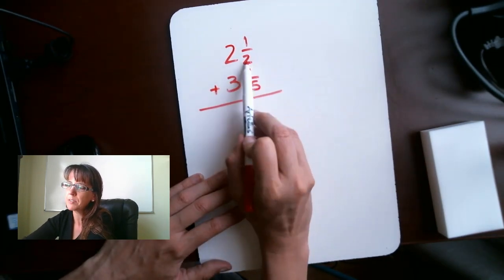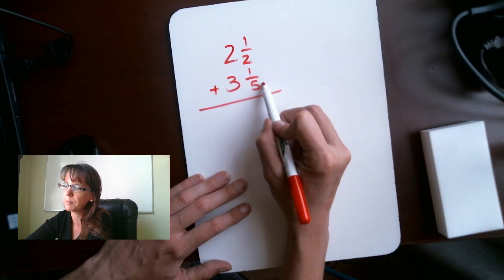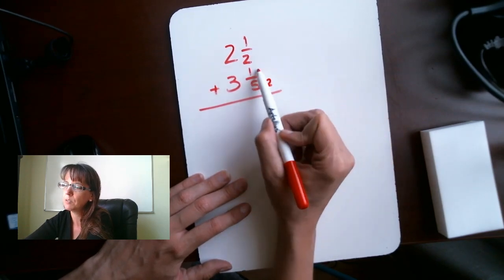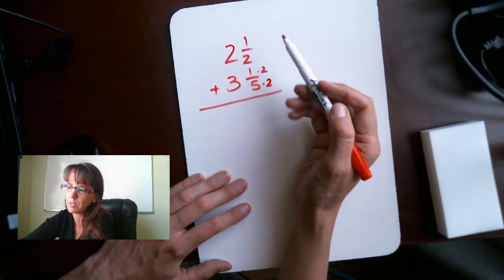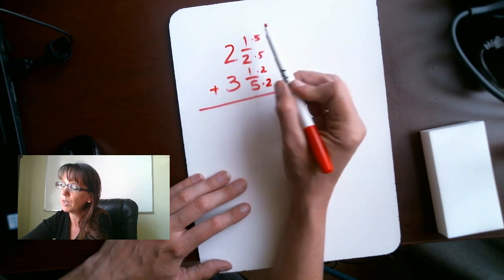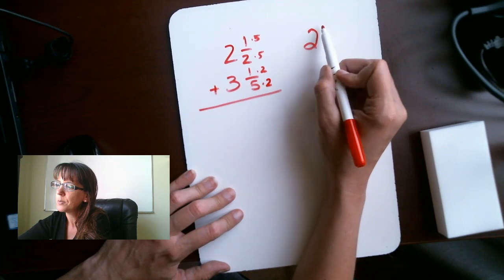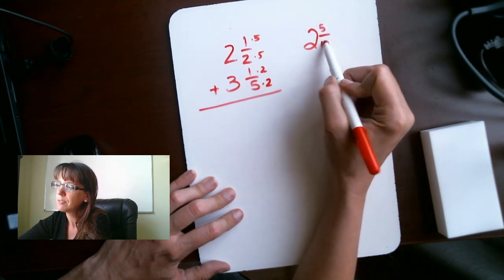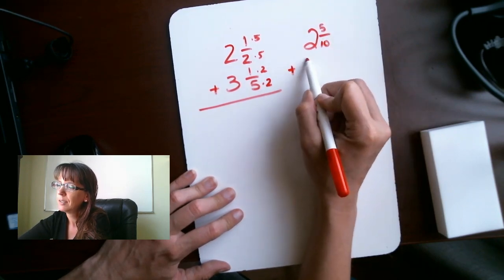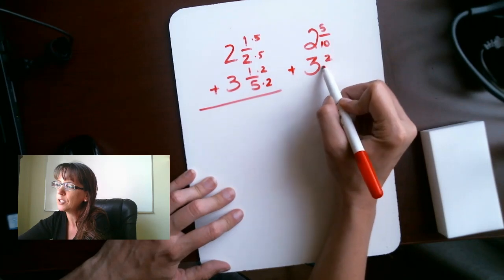let's multiply 5 times 2 for our common denominator. So, multiply this by 2 over 2. Because if I do it on the bottom, I have to do it on the top. Multiply this by 5 over 5. What I end up with is 2, 5 over 10, plus 3 and 2 over 10.